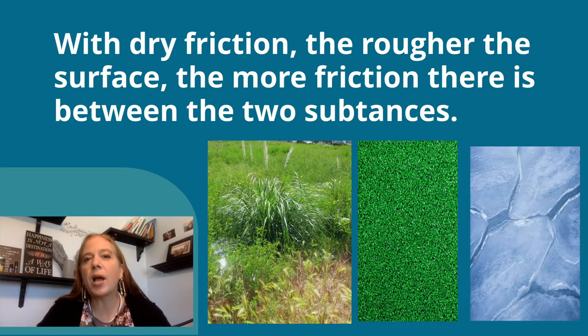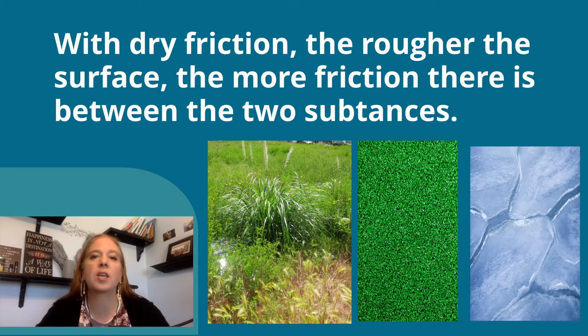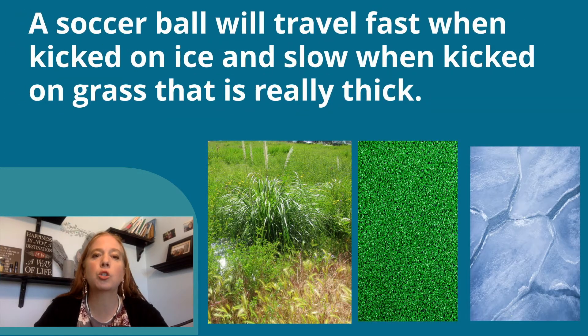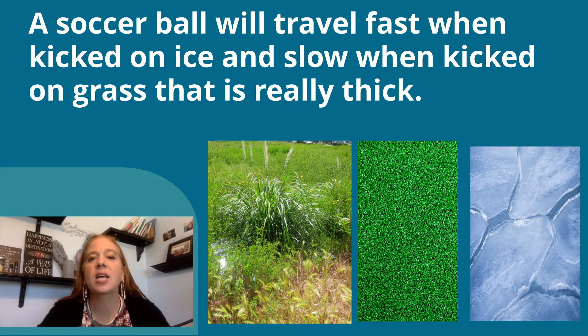With dry friction, the rougher the surface, the more friction there is between the two substances. A soccer ball will travel fast when kicked on ice and slow when kicked on grass.